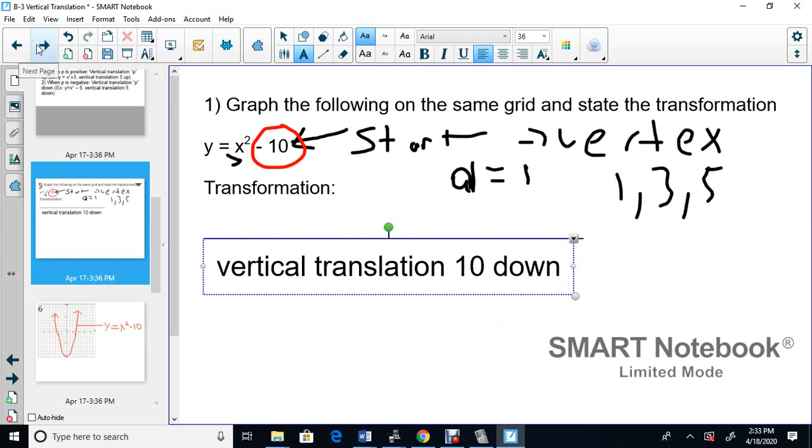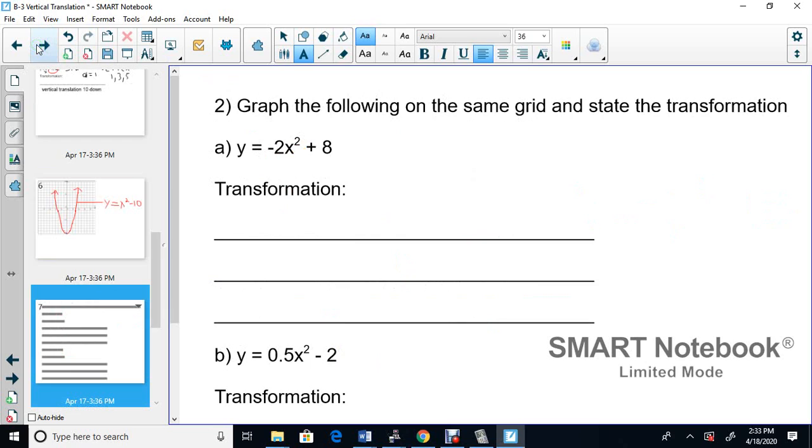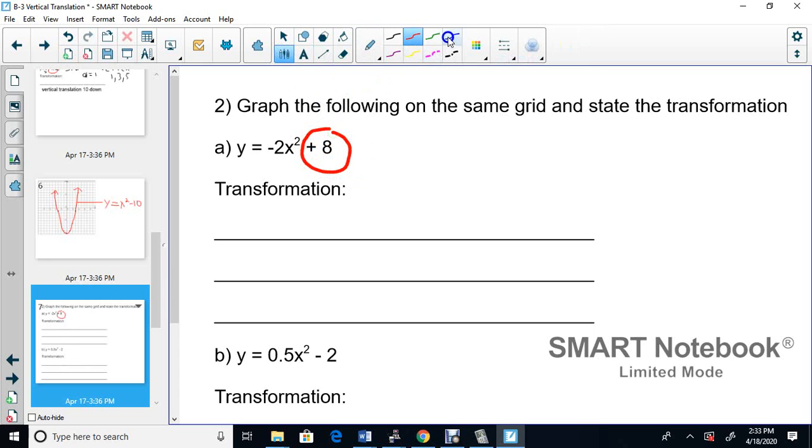Now we're going to go to the next one. Question 2, we have to graph and we got this negative 2. For this particular one, we're going to start off. This 8 here, this 8 is our starting point.